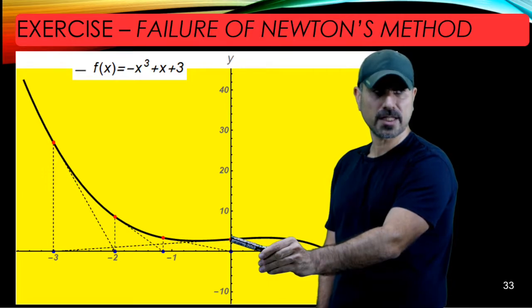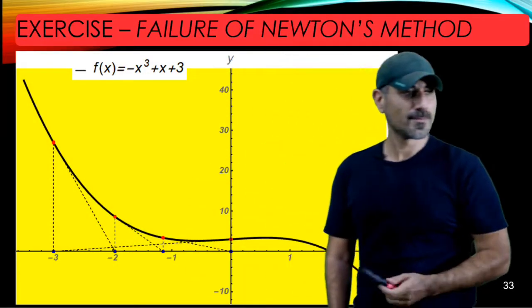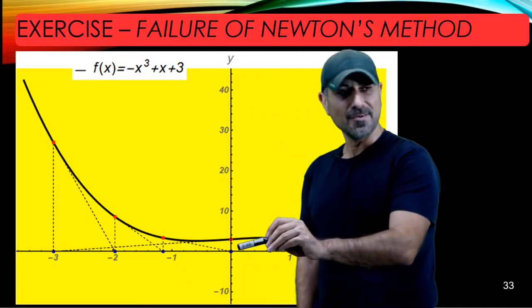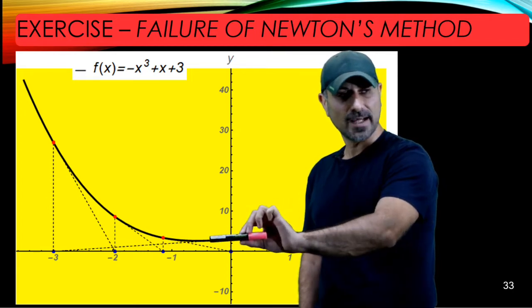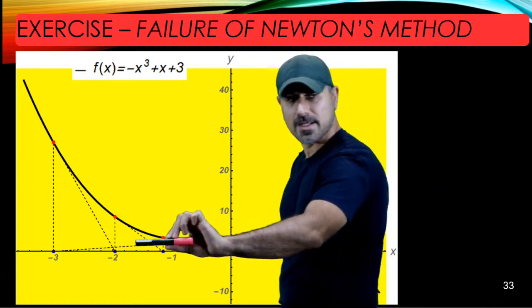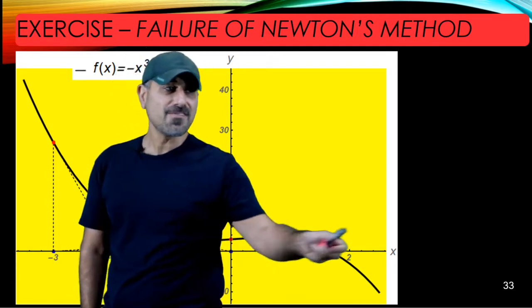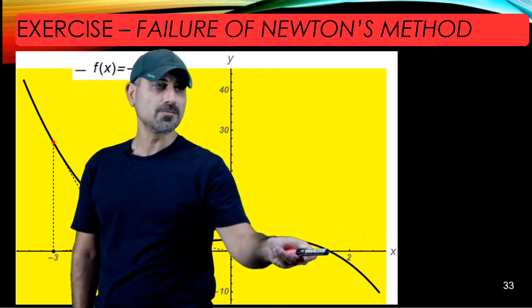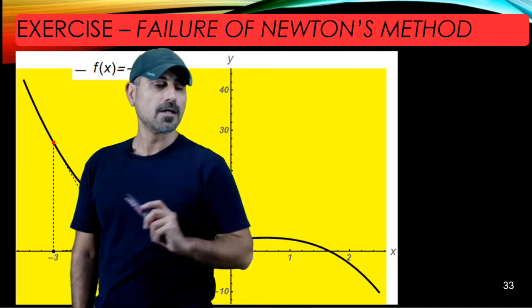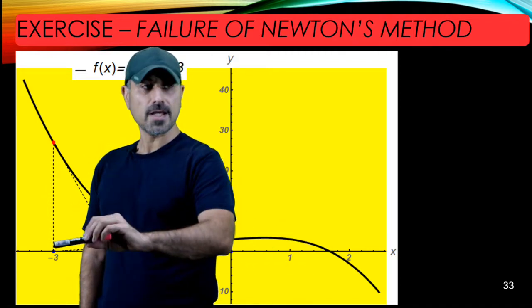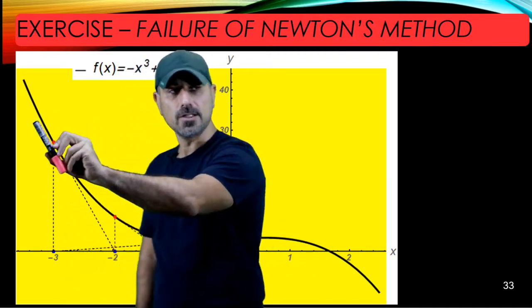The first time, you look at the value of the function here and then the tangent line equation. Even in the first step, the tangent line at this point intercepts the x-axis at -3, which is very far from the actual zero.